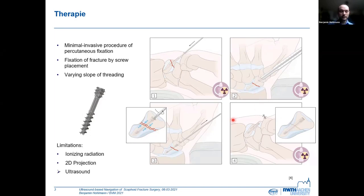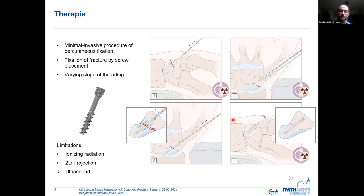This, of course, has a number of drawbacks. First of all, both the patient and the surgeon are exposed to ionizing radiation. And second, it's a 2D projection of a 3D geometry, so placement of the screw is difficult, especially in depth. That's why ultrasound is investigated as an alternative imaging technology.